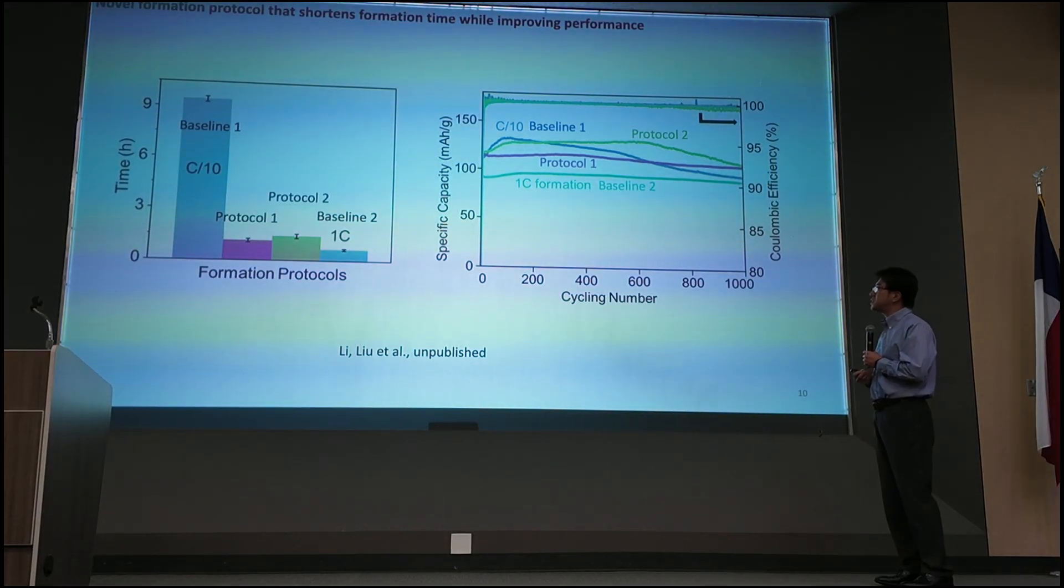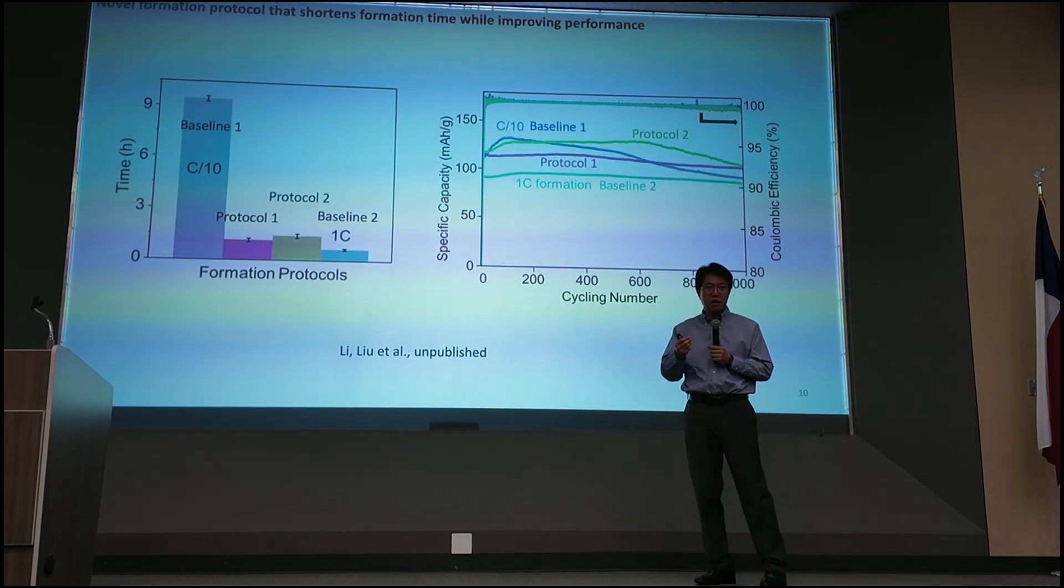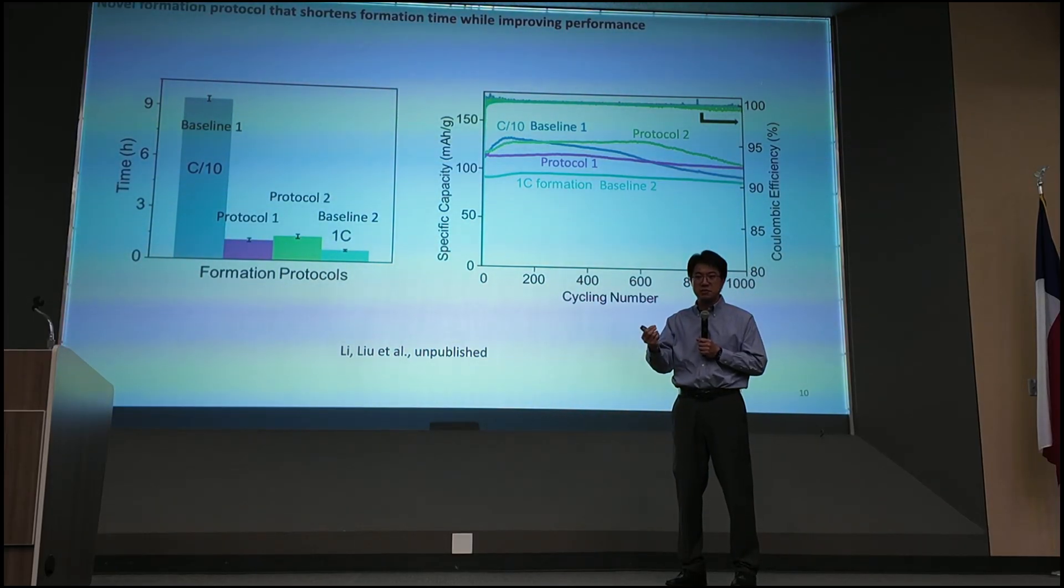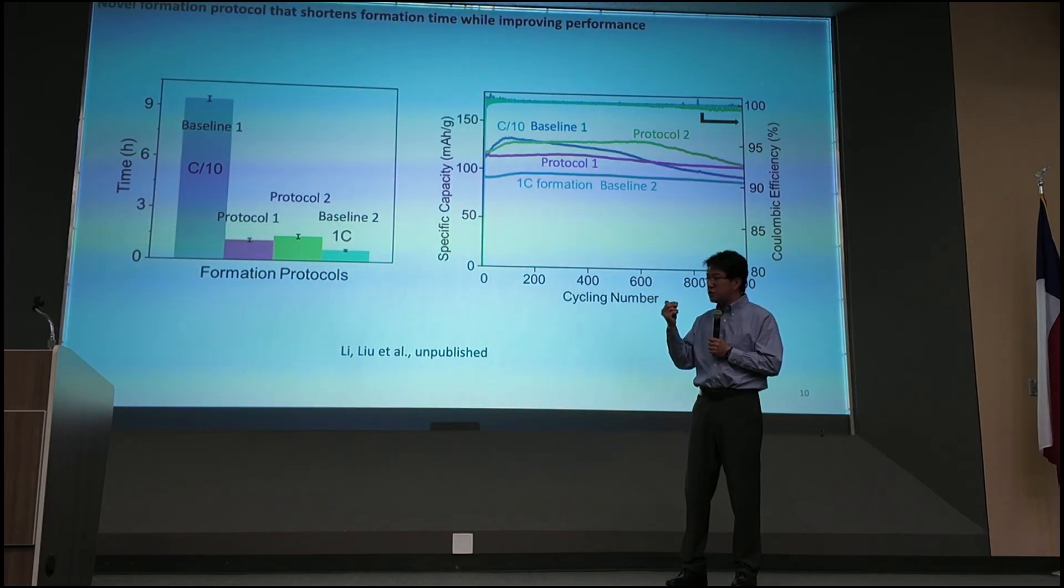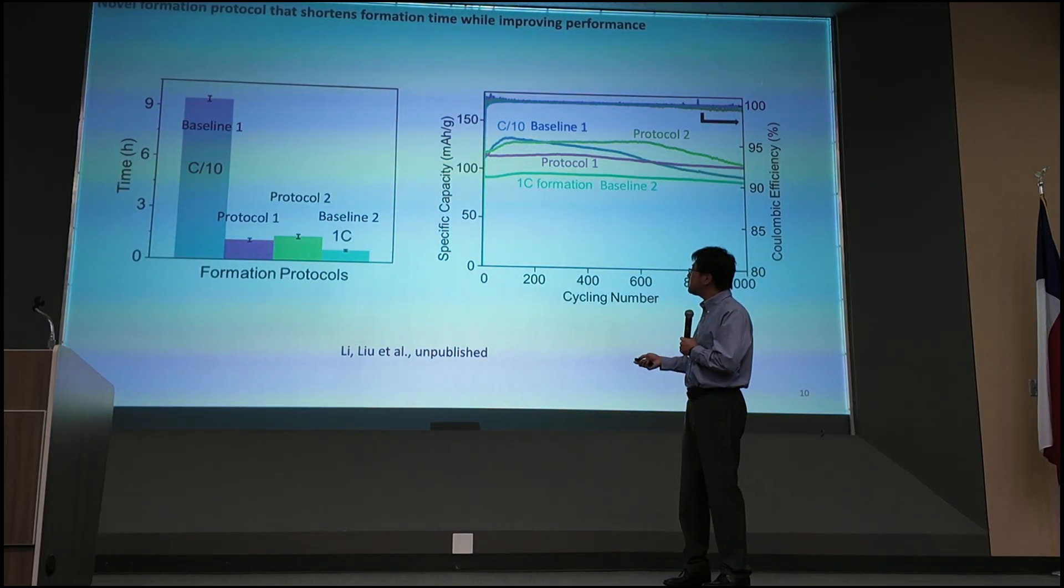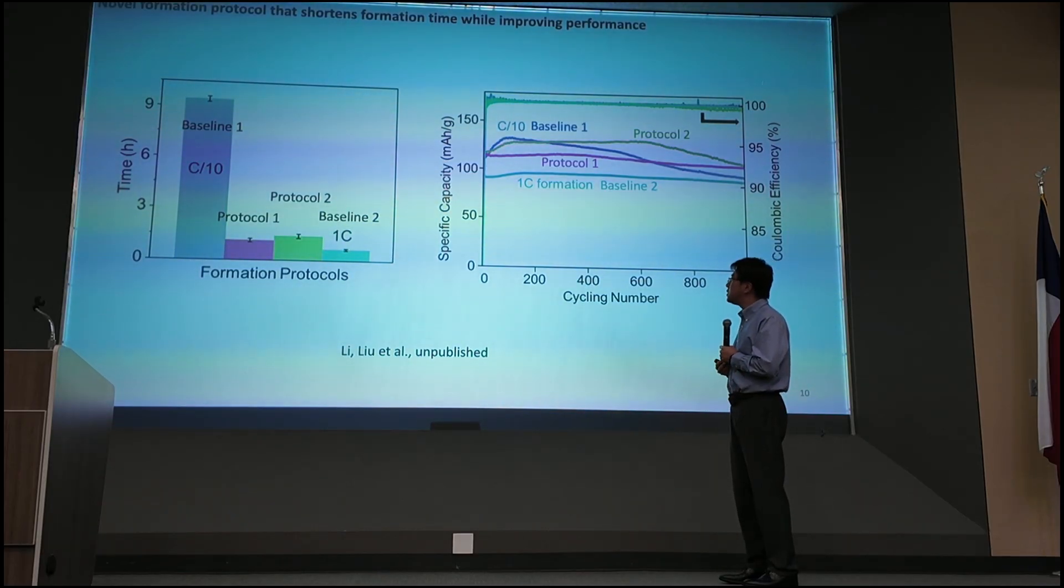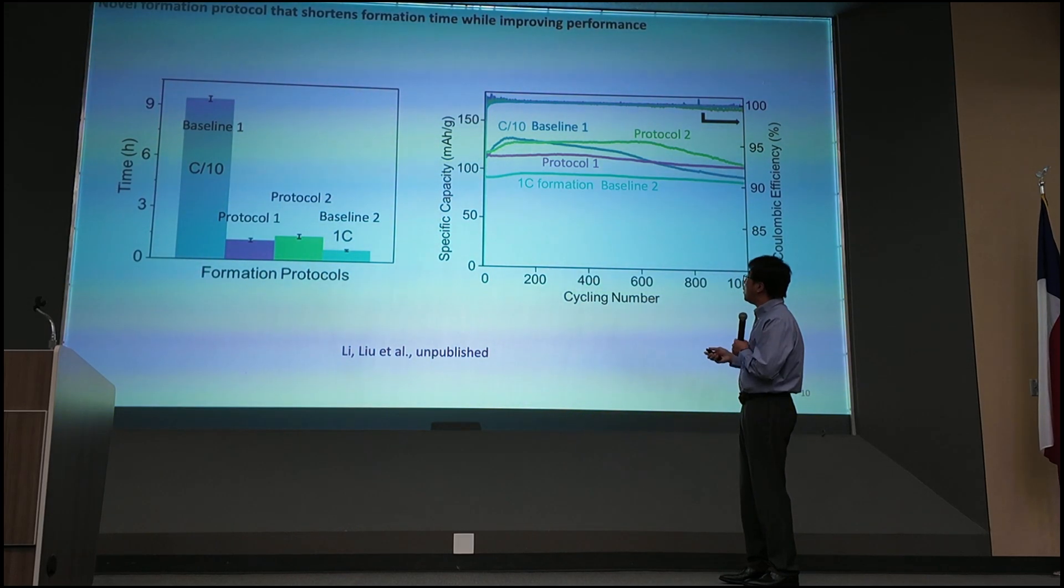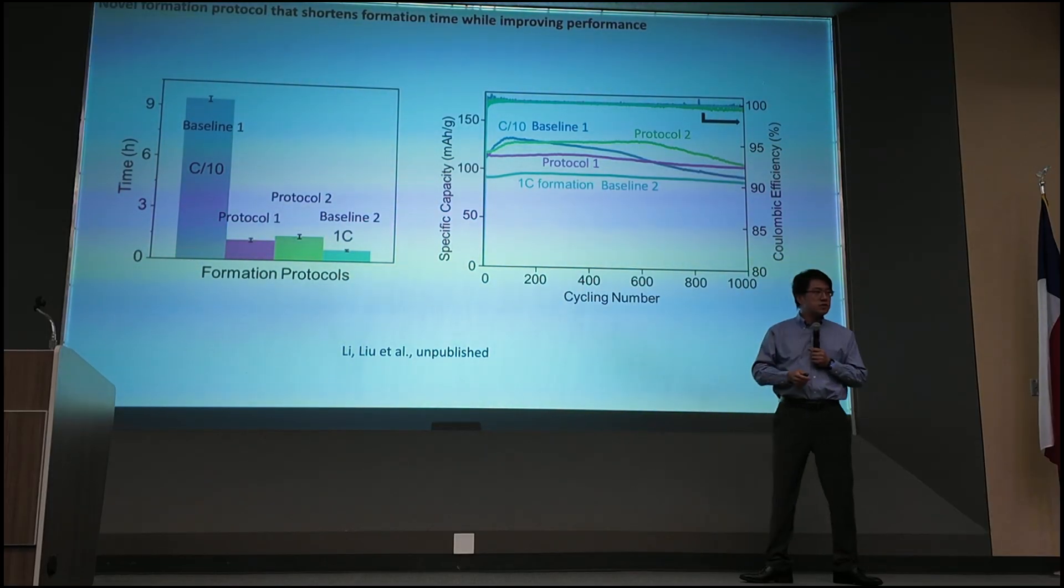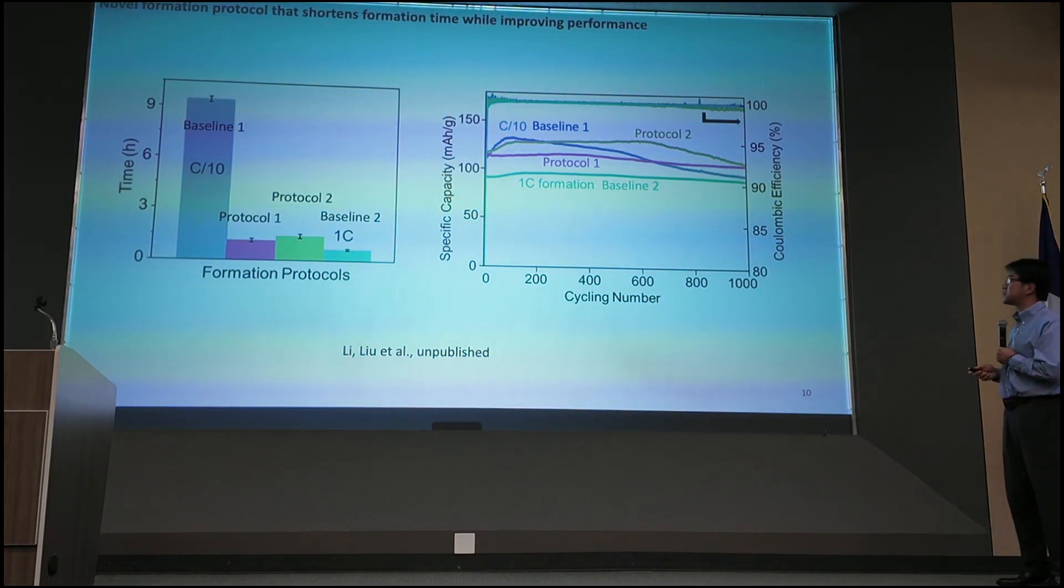So long story short, in this particular study, what we did is that we designed different formation protocols. Traditionally, what you do in the formation is that you make a battery. The first time you cycle it, you try to be very gentle. You run a very small current. You cycle it, you charge it over 10 hours, or sometimes 20 hours, sometimes even longer. And if you do it faster, using a higher current charging, you can see on the right hand side, that there's a baseline shown here, the capacity is just not good. But with some improvement of the protocol, we can not only make the efficiency high, but also improve the performance on the right. So that really is the goal of our research. We really want to address those challenges in this field.